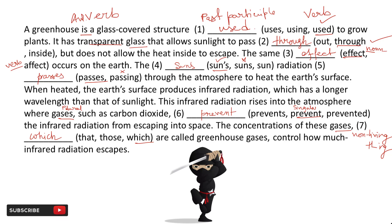'It has transparent glass that allows sunlight to pass through, but does not allow the heat inside to escape. The same effect occurs on the earth. The sun's radiation passes through the atmosphere to heat the earth's surface. When heated, the earth's surface produces infrared radiation which has a longer wavelength than that of sunlight. The infrared radiation rises into the atmosphere where gases such as carbon dioxide prevent the infrared radiation from escaping into space. The concentration of these gases, which are called greenhouse gases, control how much infrared radiation escapes.'